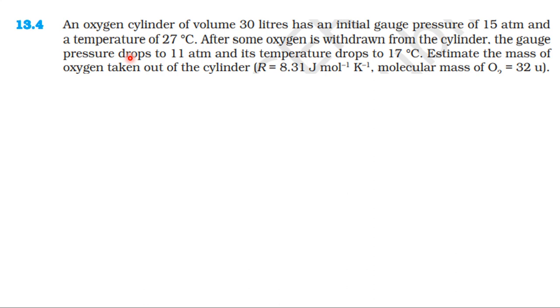Now we have a cylinder. The cylinder volume is 30 liters. The initial gauge pressure is 15 atm, and this is the pressure exerted by the gas inside the cylinder.